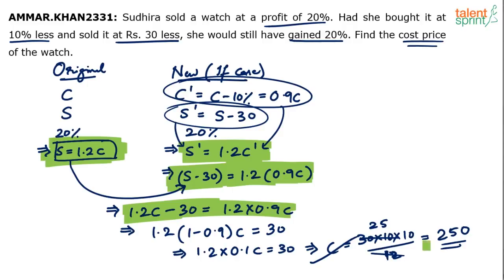You get the cost price as 250 upon simplifying this. So it looks to be lengthy but a very simple solution. You should just play with these equations simplified to get the answer. So the cost price of the watch will be 250. You can also go by options if you want but since options have not been given we couldn't try that method. If options are given we can check which option is satisfying the given conditions. So the answer to this one is 250 rupees.